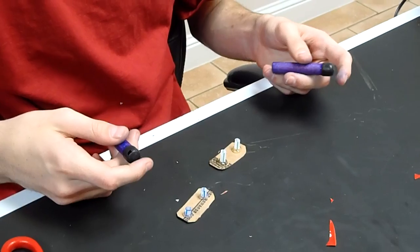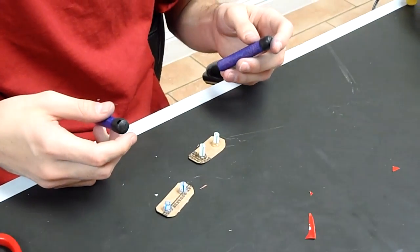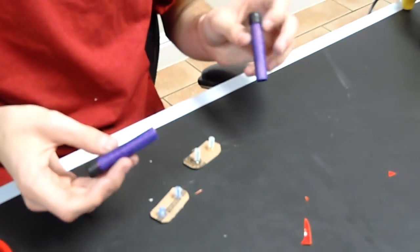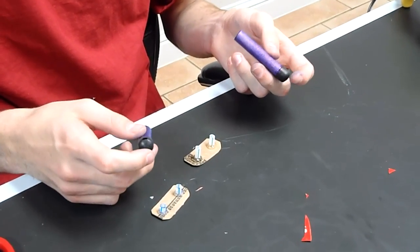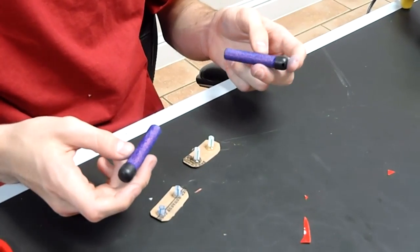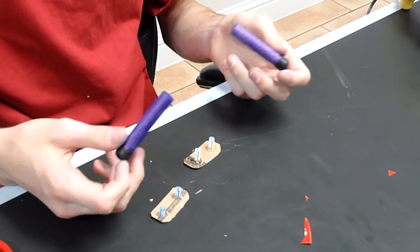Now, this one's going to take a minute to dry, but once it does, you set your darts on the pegs, and you're good to go. So that's how you make the speed loader for the barrel break, and thanks for watching.